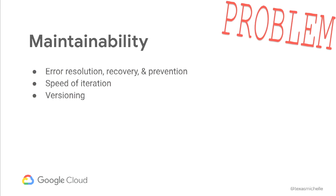Once you have all those pieces together, how do you maintain it? Are you able to discover when you have errors? Once you've found them, can you recover from them? Can you fix them to prevent them from happening again? What does the speed of that process look like? Do you have a good CI/CD process in place for your machine learning applications? When you have a bug, can you revert back to a previous version — is it that easy for machine learning?